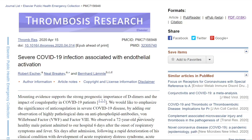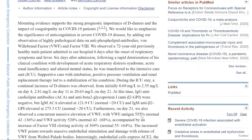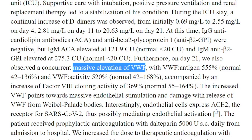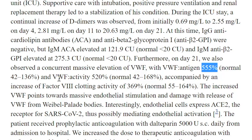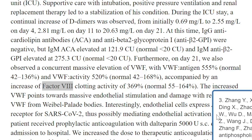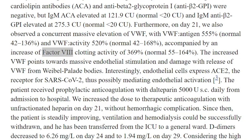There was an article published on April 15, 2020 in Thrombosis Research describing a patient who came in and what happened with their coagulation factors. It showed a massive elevation of von Willebrand factor — the antigen was 555% of normal, and the von Willebrand factor activity was 520% of normal, when normal is 42 to 168. Other factors were also increased, including factor VIII of the coagulation cascade. They realized that the increased von Willebrand factor points toward massive endothelial stimulation and damage with release of von Willebrand factor from Weibel-Palade bodies. Notably, endothelial cells express ACE2, the receptor for SARS-CoV-2, possibly mediating endothelial cell activation.